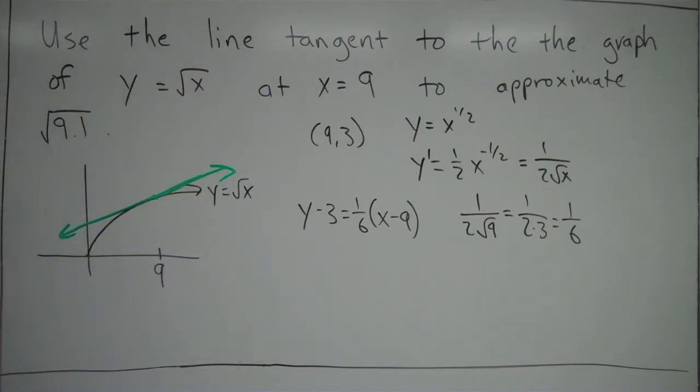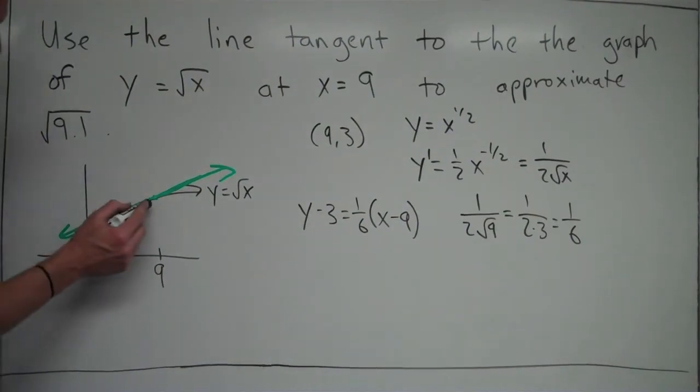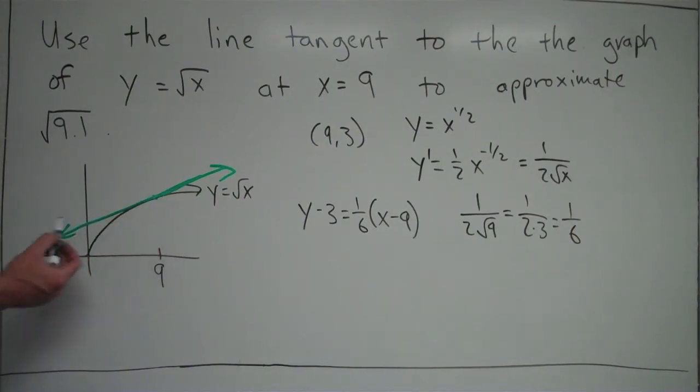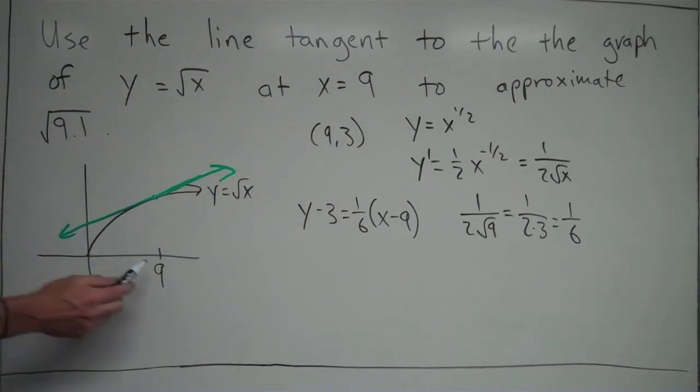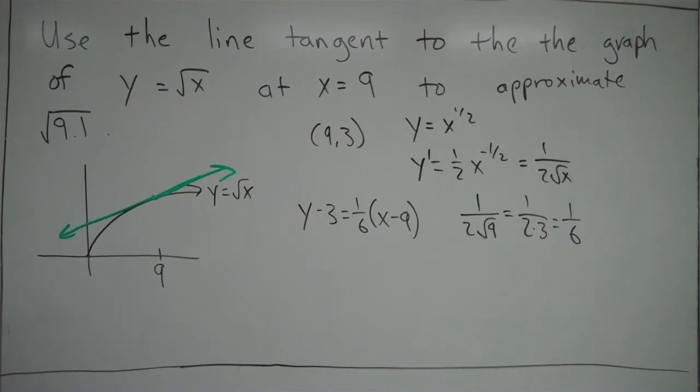And again, like I said in the previous video, the idea is that if you stay close to x = 9 on this tangent line, you can see that the y values of the tangent line and the graph are very similar. As you get further away, you can see that the y values are not very close. But if you stay close around 9, which 9.1 is, you'll notice that the y value of the tangent line and the function are very similar.